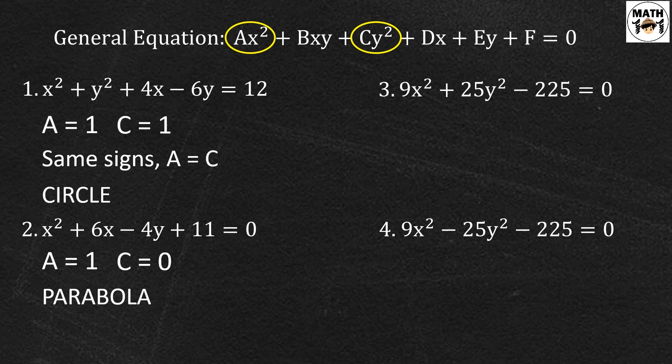Number 3, a is equal to 9 but c is equal to 25. So pareho sila ng sign pero hindi sila equal. So this represents an ellipse.